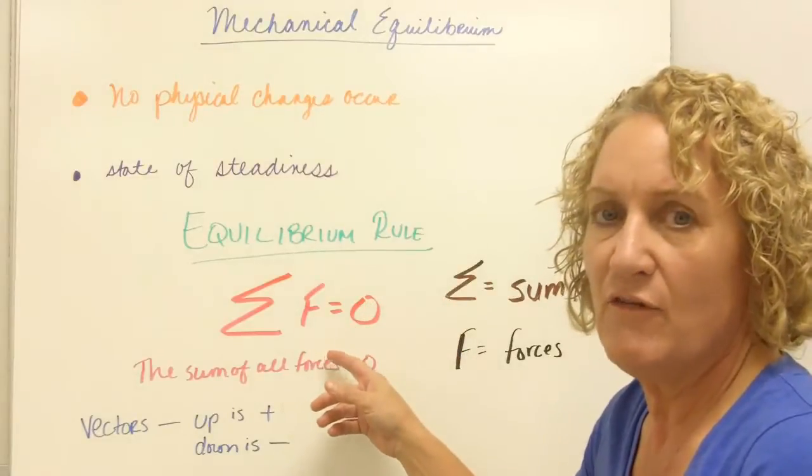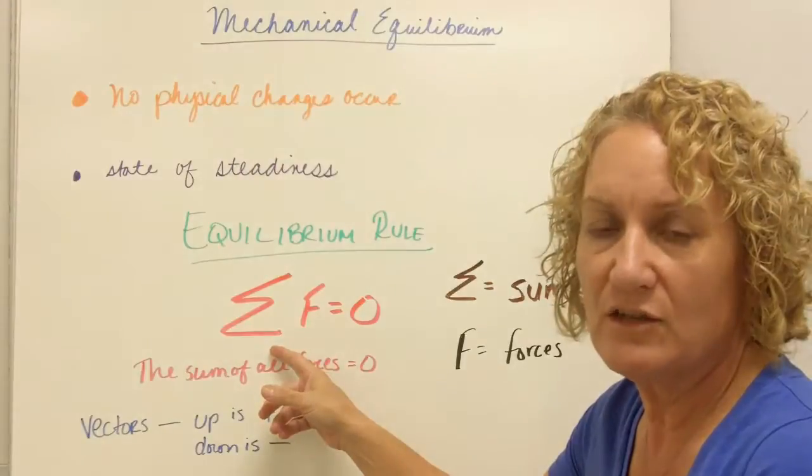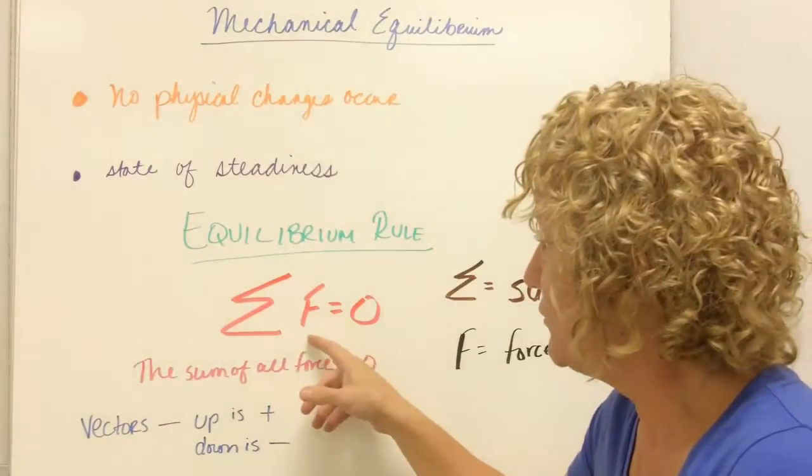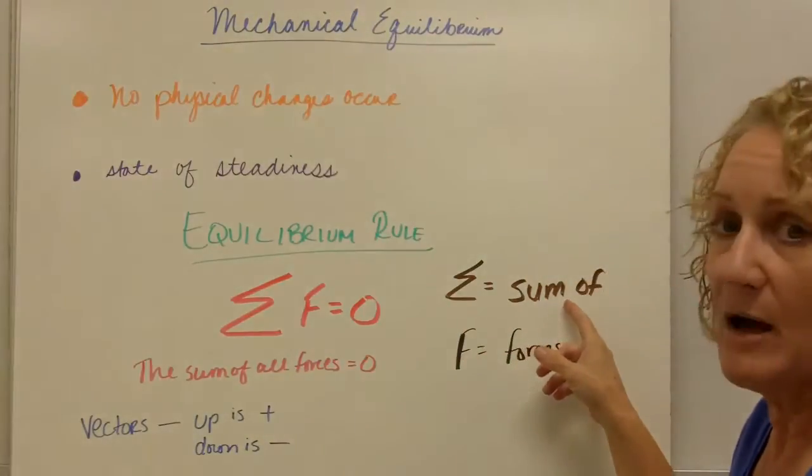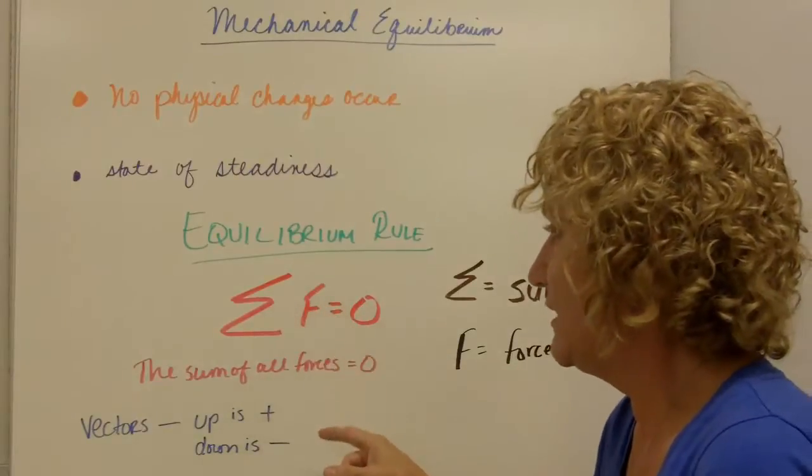The equilibrium rule says the sum of all forces equals zero. Now you may not have ever seen this before. This is the Greek letter epsilon, and it means add it all up. So what we're adding up is all the forces. So this epsilon means the sum of, and F is forces. So the sum of all forces equals zero.